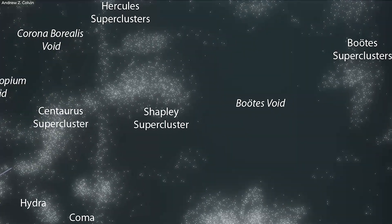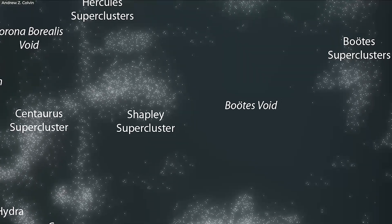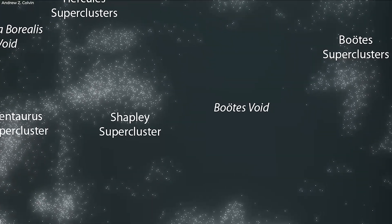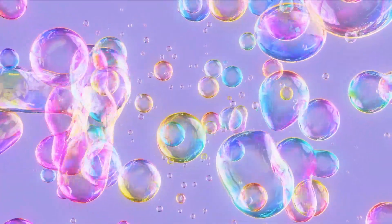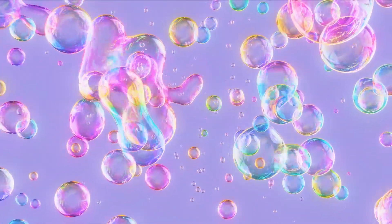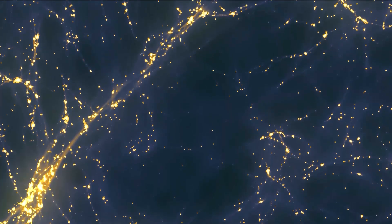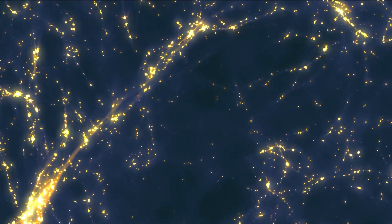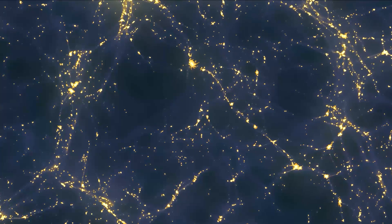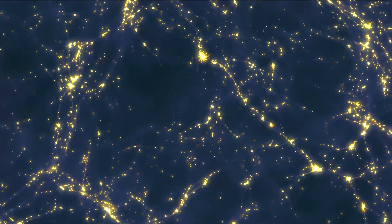In turn, they suspect that the Boötes void is the result of smaller voids coming together, much like how soap bubbles coalesce to form a single large one. As for the tube of galaxies, that's likely the remnant of the boundary between the smaller voids. Those galaxies are now stranded inside the supervoid.